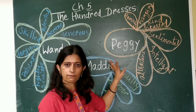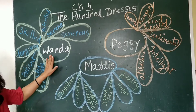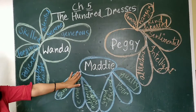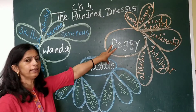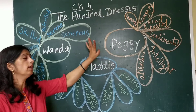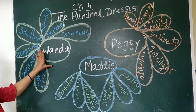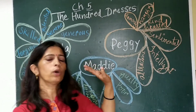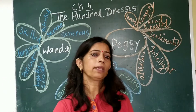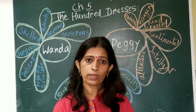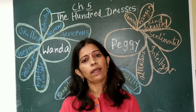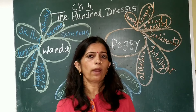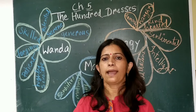Now let us discuss the three main characters. One was Wanda, another was Peggy, and the third one was Maddie. Peggy and Maddie were friends. Wanda, if you remember, she was a poor, outcast child who was not liked by the other girls because she didn't have good clothes to wear. She had only one faded dress. So she was an outcast child who did not have any friend.